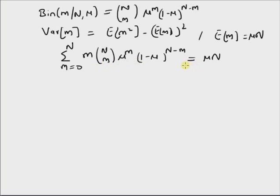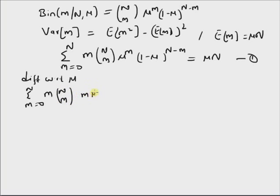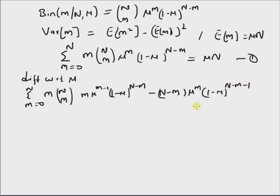Now differentiating this expression with respect to mu, we get summation m equal to 0 to n of m times n choose m times m times mu to the power m minus 1 times 1 minus mu to the power n minus m, plus the second term which is minus (n minus m) times mu to the power m times 1 minus mu to the power n minus m minus 1, and this is equal to n, the derivative of mu times n.